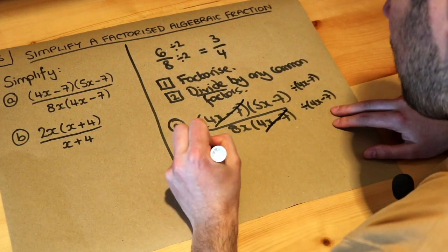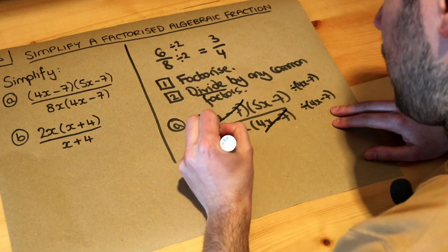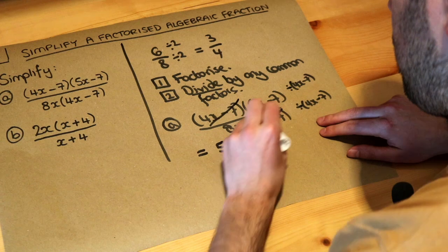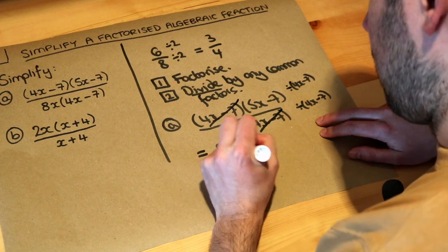So then we're just left with the 5x - 7, and I don't need brackets around it anymore, because there's nothing around the 5x - 7, over 8x, and that's the final answer.